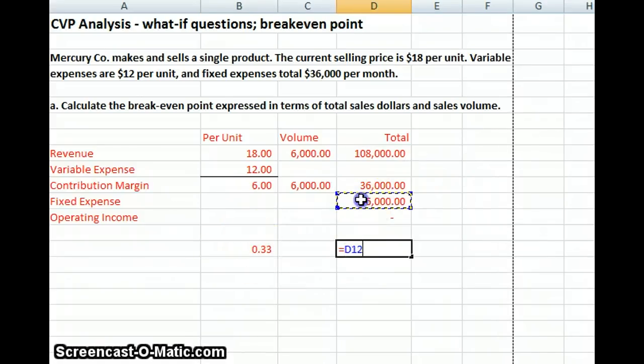we're just going to take our fixed expenses divided by our contribution margin ratio, and we come up with 108,000. So we can get it either way.